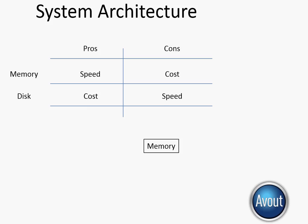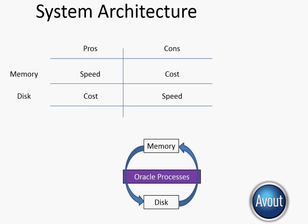So Oracle will try to do as much in memory as it possibly can, but occasionally it will have to write information out to disk. How all of these things are coordinated together is through the Oracle background processes, and we'll take a look at that in a little bit.